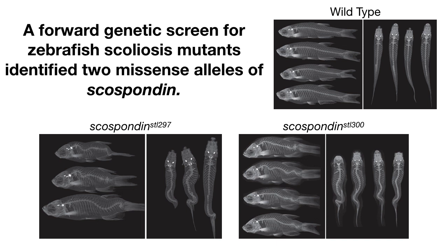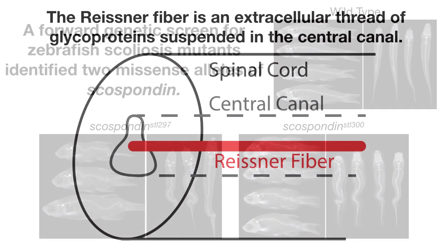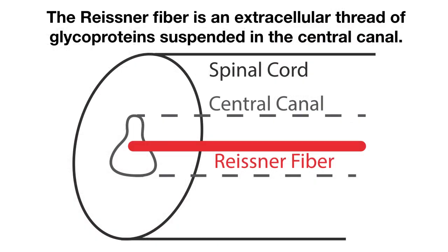Scospondin is highly conserved among chordates and is the main component of the Reissner fiber. The Reissner fiber is an extracellular thread of glycoproteins suspended in the central canal, secreted by the subcommissural organ into the CSF of the brain ventricles, and spans the length of the spine.